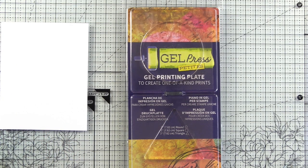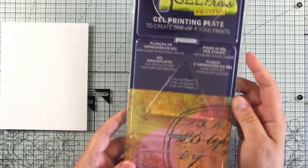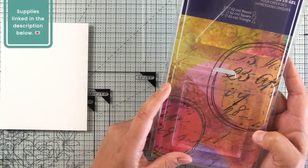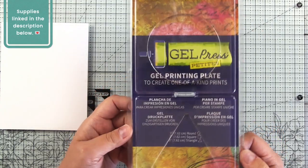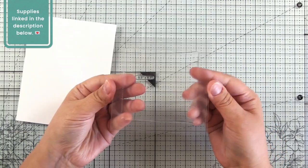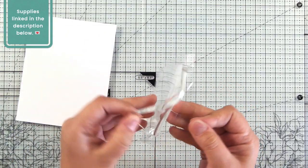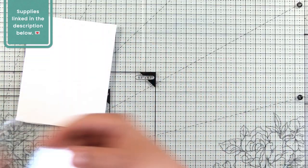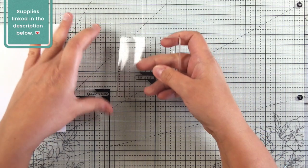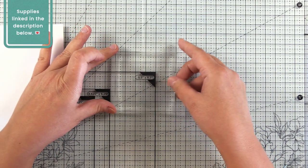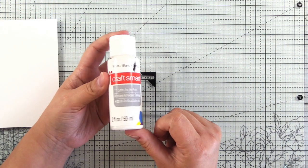What I have here are the Gel Press Petites, which is a set of three small gel presses that are all three inches. You've got a three inch circle, three inch triangle, and three inch square. I thought that these would be a little bit more manageable for me. I'm not super familiar with mixed media or gel press work, and I thought that these would be a great size for card making, which is mostly what I do.